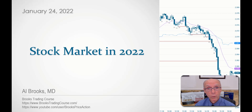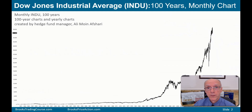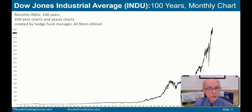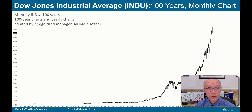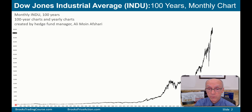Today is January 24th. We had a big reversal today in the E-mini. I'm going to begin by showing the Dow Jones Industrial Average. This is a chart that goes back a hundred years, way back to the 1920s. This chart, as well as some yearly charts that I'm going to use, were created by a hedge fund manager, Ali Afshari, who's a friend of mine and has been in my chat room for many years.